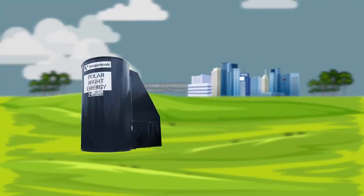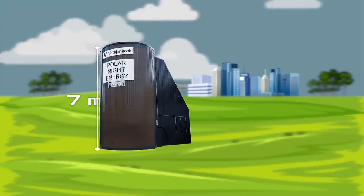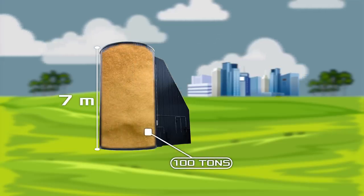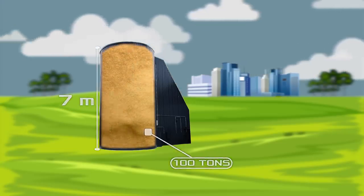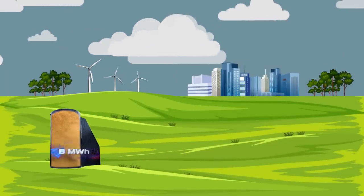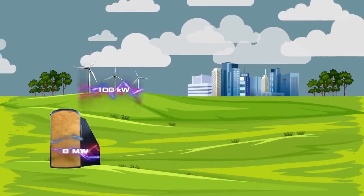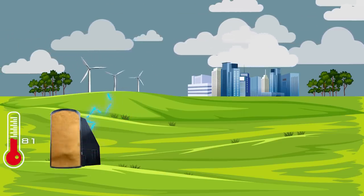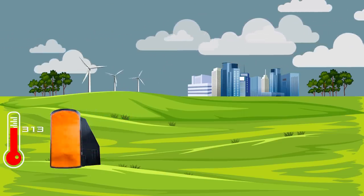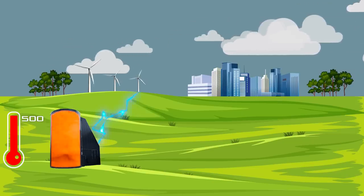This thermal energy storage system looks like a 7-meter-high bunker, inside of which there are about 100 tons of low-grade sand. The device is capable of storing 8 megawatt-hours of energy at a rated power of 100 kilowatts. Cheap electricity heats the sand to a temperature of 500 degrees Celsius, due to the so-called resistive heating.